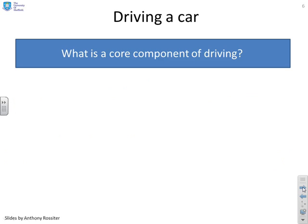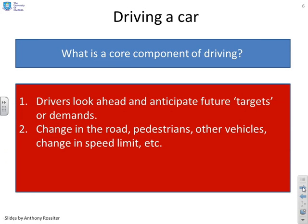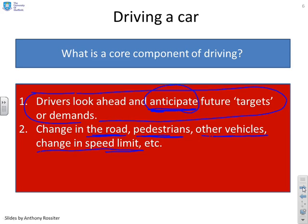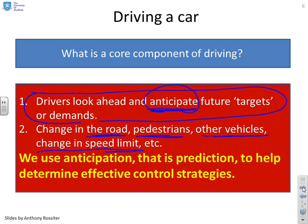Consider driving a car. What is a core component of driving? Drivers look ahead — they anticipate future targets or demands. Typical things they'll be looking for: does the road change, are there any turns or obstacles, are there any pedestrians and are they about to step onto the road, are there other vehicles — parked or moving — and do I have to change my trajectory to avoid them? Is there going to be a change in the speed limit? The key word is anticipate: we're anticipating all future obstacles and targets and using that to update our plans. Humans use anticipation — or equivalently, prediction — to help determine effective control strategies when driving.